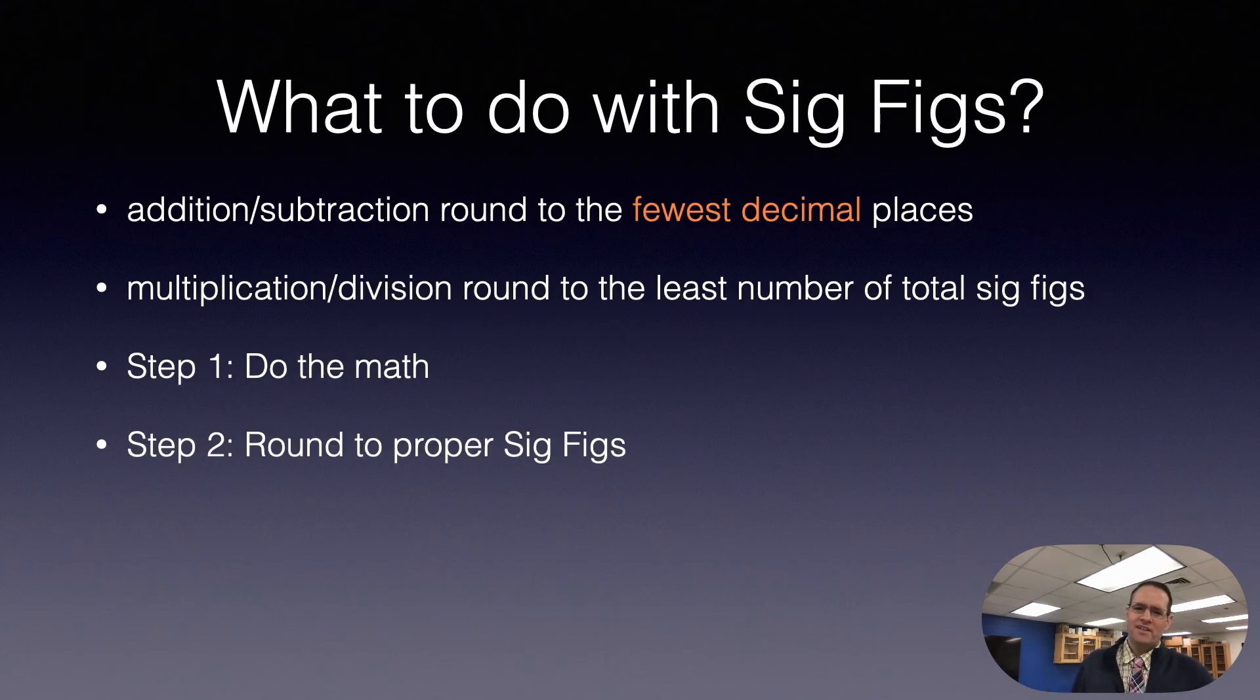If you have an addition or subtraction step, you want to round it to the fewest number of decimal places. If you're doing multiplication or division, which is what we do most of the time in chemistry, you want to round the final result to the least number of significant figures. Always do the math and then at the end round to the proper significant figures. Write your units and I like to box the answer so I know I'm done with the problem.